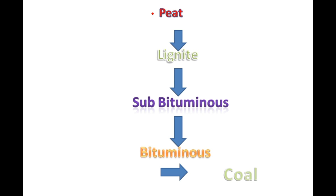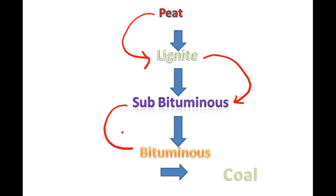What happens is that we have peat, which is like plant material. These plants are converted to coal. The process goes: peat is converted to lignite, then the sub-bituminous part is converted from lignite, and finally we have the formation known as coal — specifically anthracite, which is the final product. It all starts from peat.